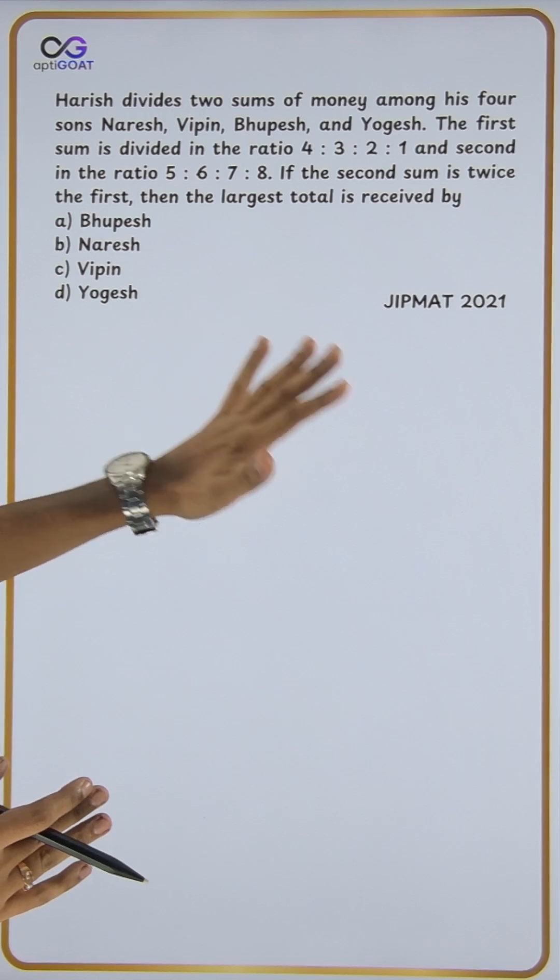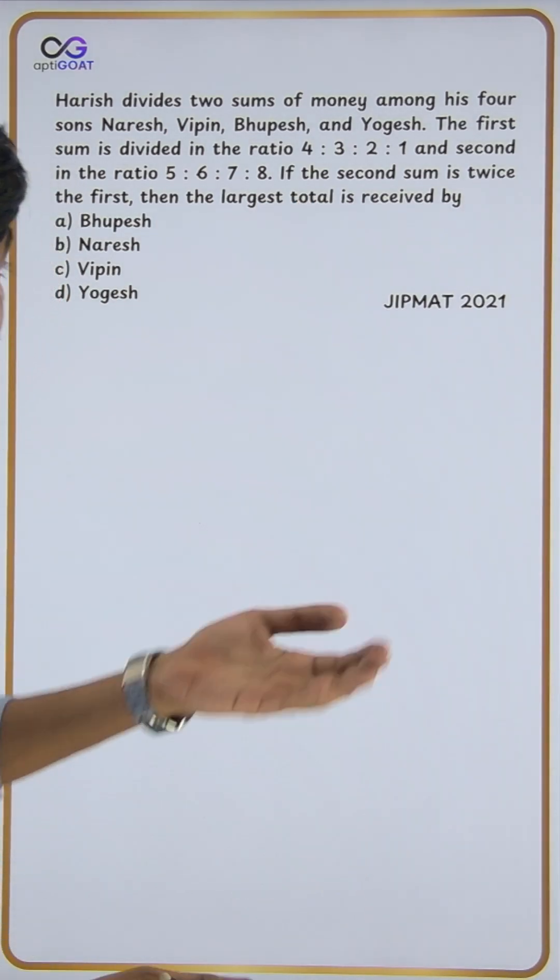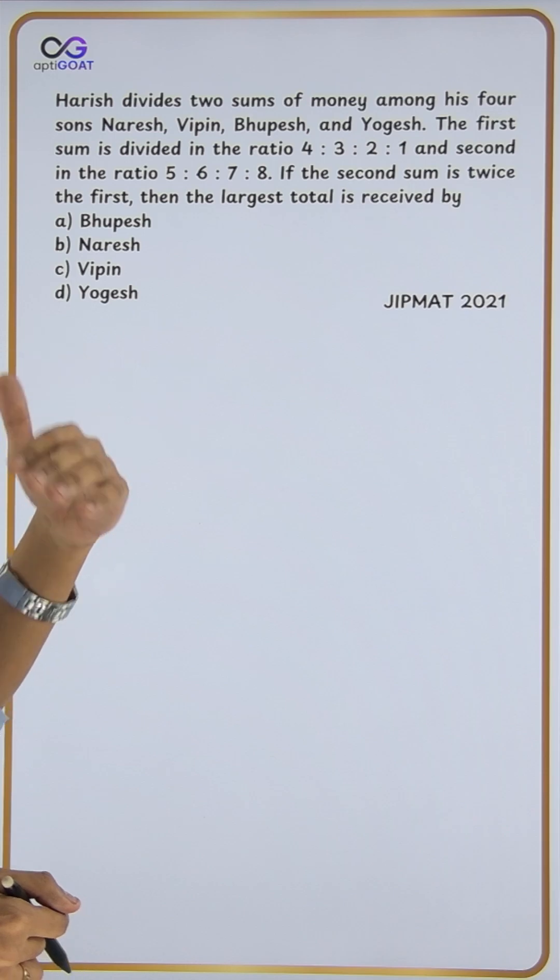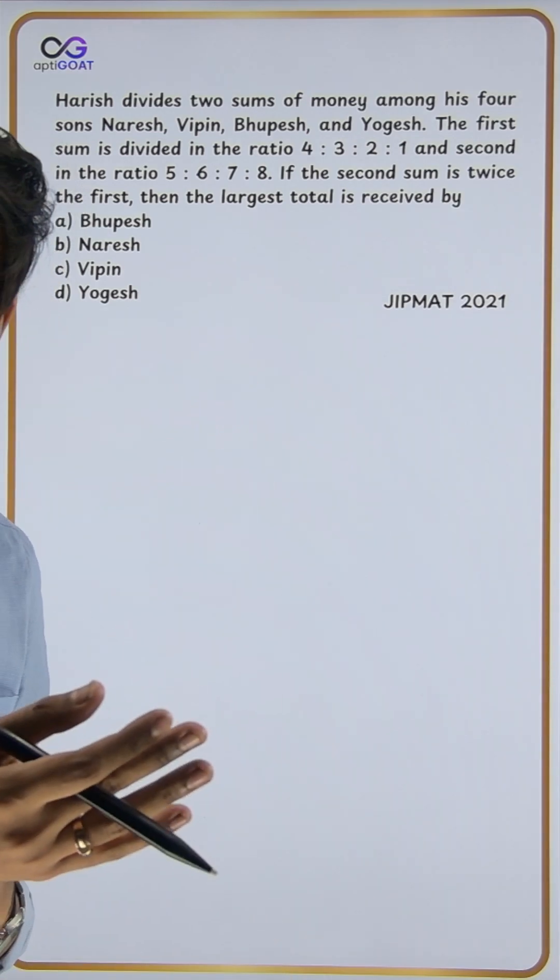Question kya bulhra hai? Harish divides two sums of money. The first sum ratio is 4:3:2:1. The second sum ratio is 5:6:7:8. The second sum is double the first sum.